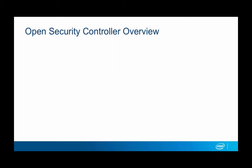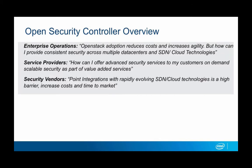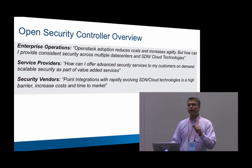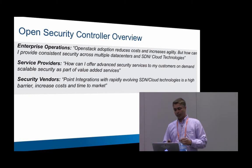Let me step back and talk about what the business problem is — why are we doing this. I have three perspectives. First, as we've been hearing this week, enterprise operations and end users really want to start adopting OpenStack, and there are a lot of things happening to bring — from a business perspective — reduced costs, increased agility, and all that. And one of the critical things from that perspective is security: how do end user operations provide security in a similar fashion to what they've been doing in their current environments? So that's one challenge.